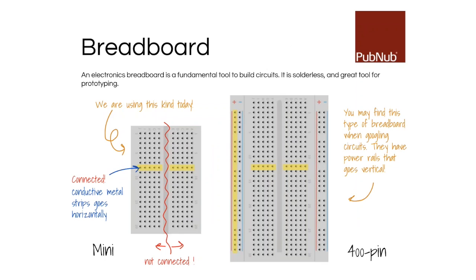The breadboard is a great solderless tool for prototyping. On a mini breadboard, you see a bunch of holes, but the holes in the same row are all connected — there's conductive metal on the back. Any pins, LEDs, resistors, or components you connect in the same row are electrically connected. If your circuit doesn't work, it's probably because the LED polarity is wrong or components are one row off.